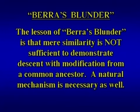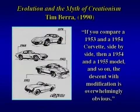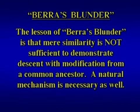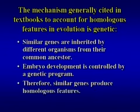The only way you could really show that those automobiles were descended with modification from one another would be to show it happened without any input from designers — through natural processes transforming one automobile into another. You have to specify this natural mechanism. The mechanism generally cited in textbooks to account for homologous features is genetic: the idea that similar genes inherited from a common ancestor control embryonic development to produce homologous features. Do similar genes really account for homology? It turns out the evidence doesn't fit this pattern.